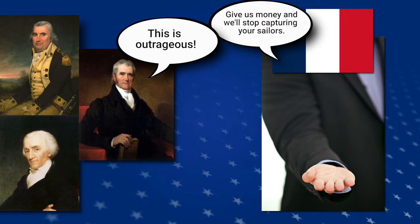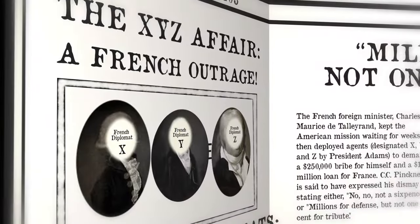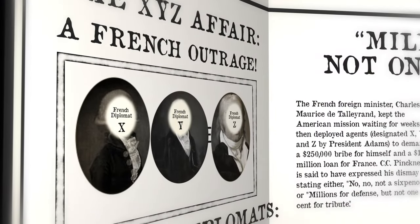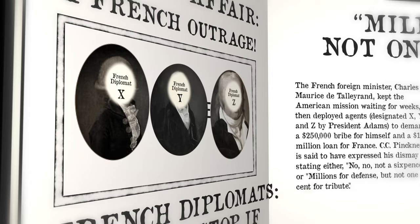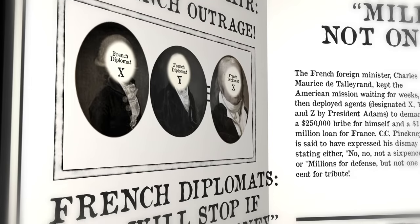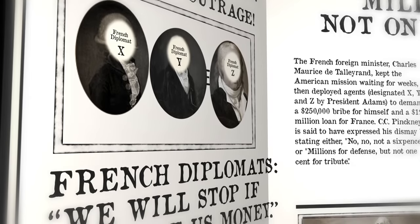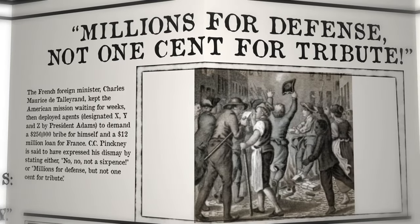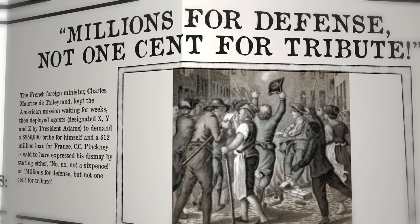American newspapers began publishing what the French had done, referring to the French diplomats as X, Y, and Z — hence calling it the XYZ affair. Americans were outraged and insulted by the demands. People cried 'millions for defense, not one cent for tribute.'